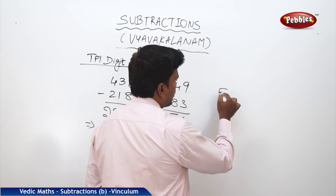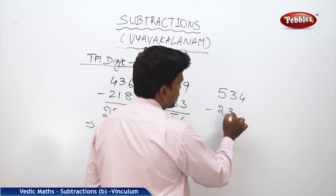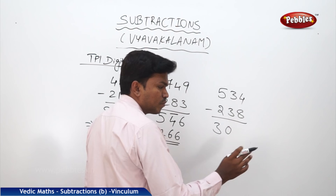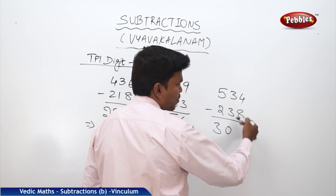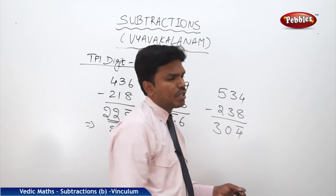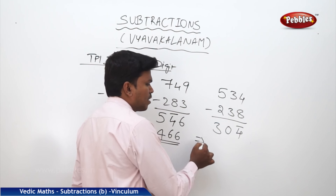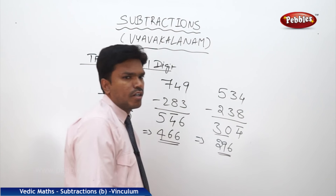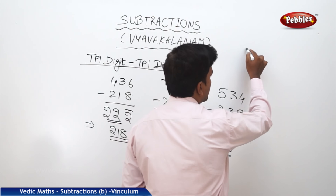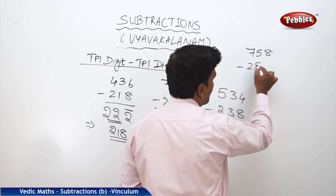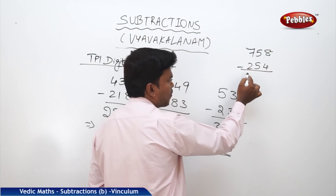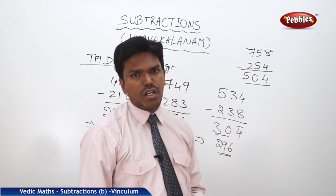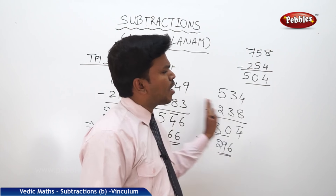Example: 534 minus 238. 5 minus 2 equals 3; 3 minus 3 equals 0; 4 minus 8 not possible, so 8 minus 4 equals 4 bar. We have 30, 4 bar. Reduce 30 by 1 to get 29, complement of 4 is 6. Answer: 296. Next example: 758 minus 254. 7 minus 2 equals 5; 5 minus 5 equals 0; 8 minus 4 equals 4 directly. Answer: 504.